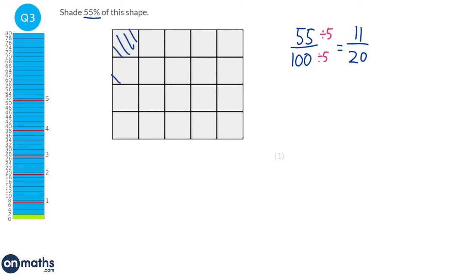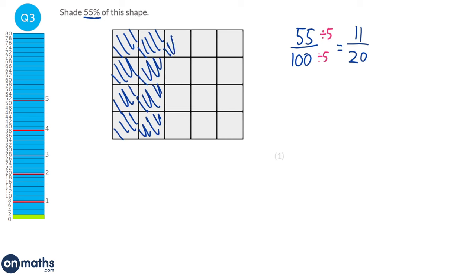So we count out 11 squares: 1, 2, 3, 4, 5, 6, 7, 8, 9, 10, 11.